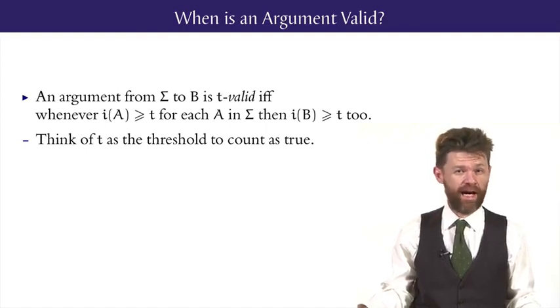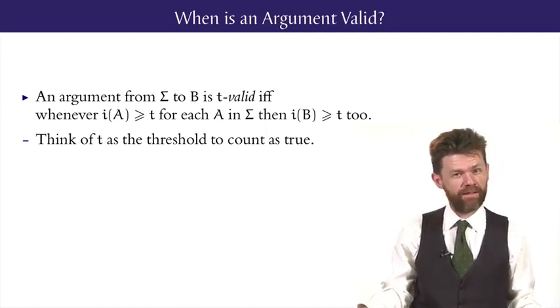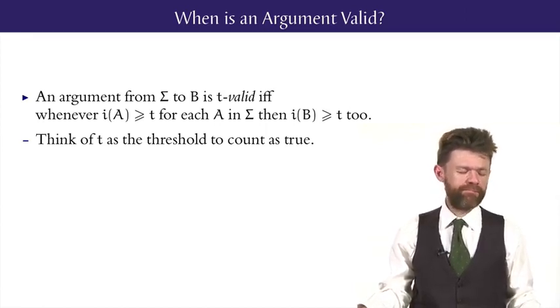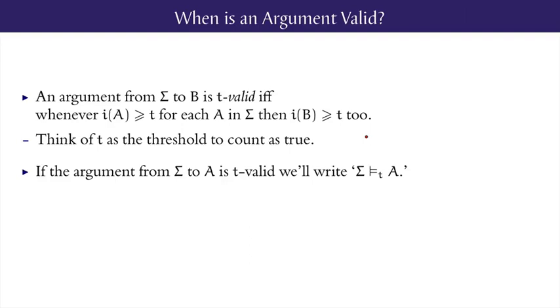So our definition of validity actually has a sliding scale, just in the same way the truth has a sliding scale. Given a threshold value for truth, say, up at level T, an argument from premises to conclusion is T-valid if whenever the premises are above T, so is the conclusion. You can think of T-validity as meeting the threshold of truth. Think of T as the threshold to count as true. Now, we'll indicate T-validity with a turnstile, with a subscript T, here on the screen. Now, if an argument is T-valued for absolutely all of the threshold values between 0 and 1, we call it absolutely valid. And an argument is absolutely valid whenever the conclusion is higher than the minimum value of its premises.